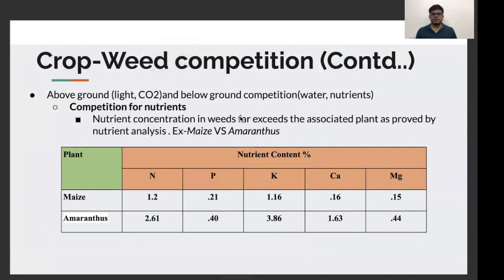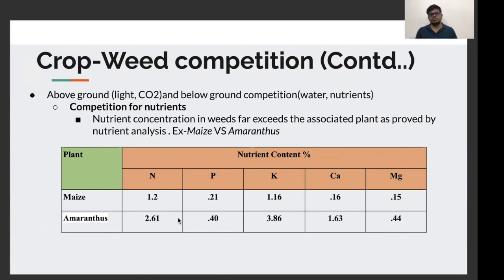Let's see the extent to which the weed competes with the crop and what harms result. For competition for nutrients, we have given a comparison of the crop maize and its associated weed Amaranthus. We can see the amount of nutrients the weed takes, thus depleting the crop of essential nutrients. In the case of Amaranthus, it absorbs almost twice the nutrients which the maize plant is taking, giving you an idea of the nutrient deficiency it can cause in a maize crop.